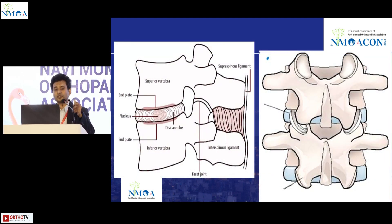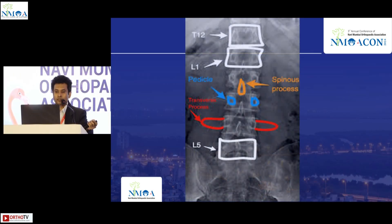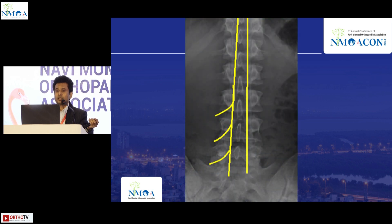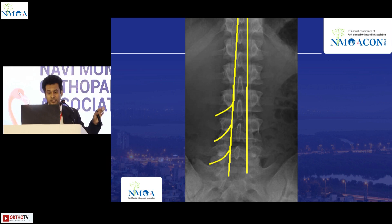If we consider the functional unit of the spine, it has two vertebrae, the intervening disc, facet joint, and the supporting ligaments. As orthopedic surgeons, we usually give these blocks under C-arm. This is how the spine looks — the pedicles, transverse process, and spinous process. Correlating the neural structures with the spine, the dura lies medial to the medial pedicular line, and the exiting nerve passes hugging the pedicle.